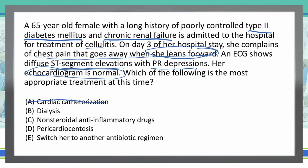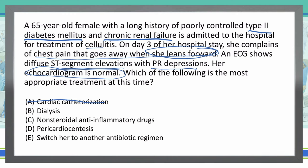Option C: NSAIDs, non-steroidal anti-inflammatory drugs. If we're dealing with pericarditis that could be viral or idiopathic, then NSAIDs would definitely be an option. But since we do have chronic renal failure, I think we're dealing more with an issue associated with uric acid rather than something viral or idiopathic. So we're probably not going to use NSAIDs — even though it's a good option in some situations, it's not the best here.